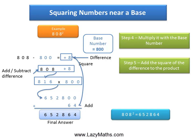So 808 squared is equal to 652,864. And that's it. Thank you.